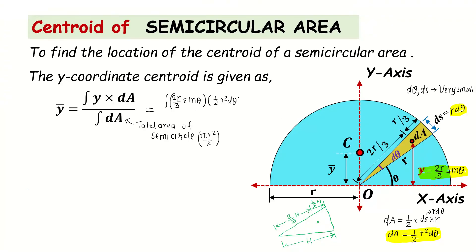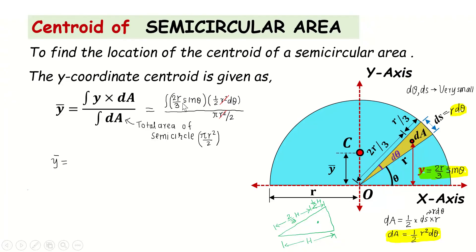Now we simplify. The r² in the numerator and r² in the denominator cancel out. Similarly, the (1/2) in the numerator and the (1/2) from the πr²/2 denominator cancel out. The remaining constant (2r/3) comes outside the integral, and π stays in the denominator, giving 2r/(3π) outside the integral.